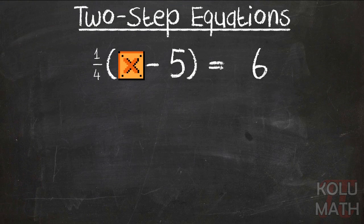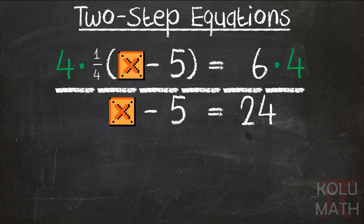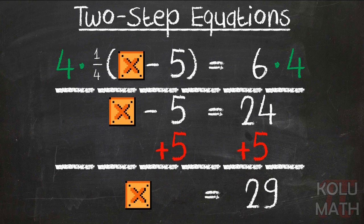Here's another one. We've got one over 4 times the quantity x minus 5 equals 6. Let's deal with that one over 4 out front by multiplying by its reciprocal, which is 4 over 1, or 4. That cancels out that one fourth out front, so we've got x minus 5 equals 24. And to deal with that minus 5, we add 5 to both sides, leaving us with x equals 29. If you think about algebra as just a bunch of little problems put together and follow the steps, you won't have too much of a problem.